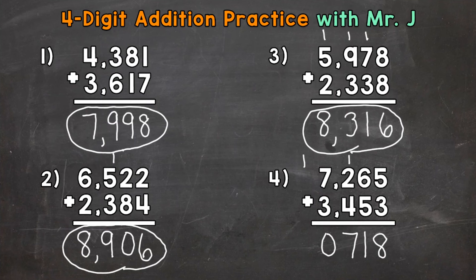Now we don't have anything else in the 10 thousands place. So we can bring that 1 straight down to the 10 thousands place in our answer. So let's put our comma in. And our final answer is 10,718.